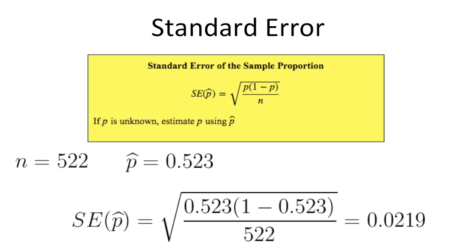In our scenario, the standard error of p hat equals the square root of 0.523 times 1 minus 0.523 divided by 522. This equals 0.0219.